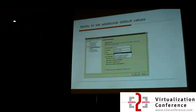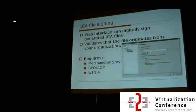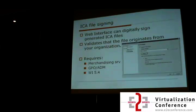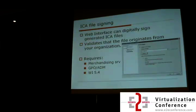For security, we can now sign the actual ICA file delivered to the client. We do that with the Merchandising Server, the ADM file for the ICA client, and the Web Interface 5.0.4 configuration. In Web Interface 5.0.4 we put a certificate and enable this feature, send that certificate to the end user via Merchandising Server, and using GPO we can enforce that users can only access ICA files certified by that certificate. If a user tries to start an ICA file pointing to an untrusted farm, they get access denied.